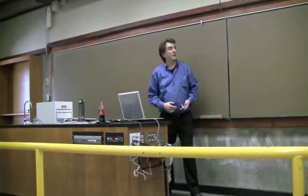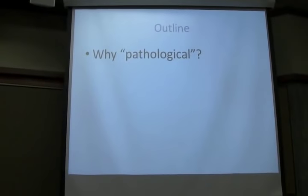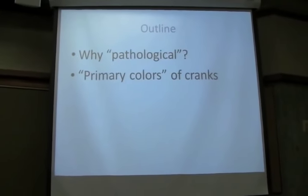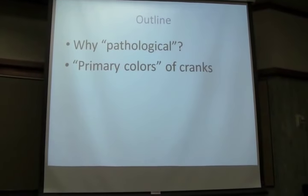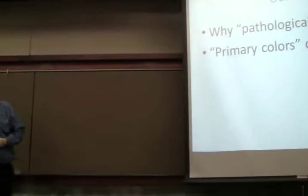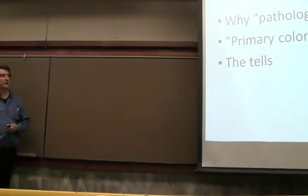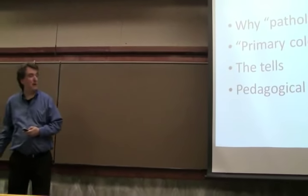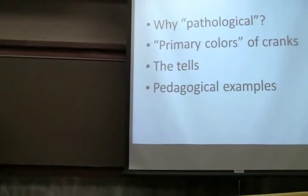So first I've got to explain the title a little bit. Well, give me an outline first. Explain the title, why I'm using the word pathological to describe this. We'll talk about the primary colors of cranks. That is, cranks have different attributes which you can mix and match to make any sort of crank you wish. The tell - something you can tell good science from bad science. And talk about some pedagogical examples, how some of this stuff could actually be used to teach real science.